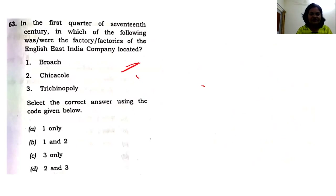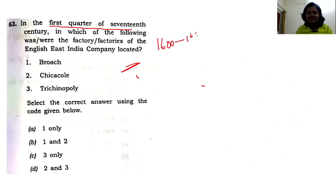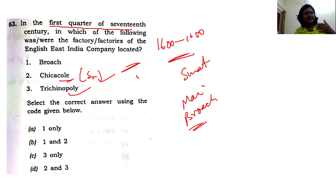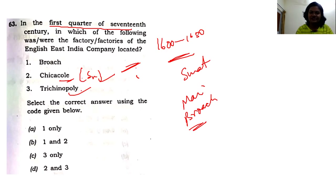The next question is about factories established by the East India Company in the first quarter of the 17th century — roughly 1600 to 1650. Majorly these were Surat, Masulipatnam, and Broach. Shikakulam near the Odisha coast was established later. Tiruchirapalli and the Kerala coast including Kochi came even later. So Broach was established in this early period — the answer is only one.